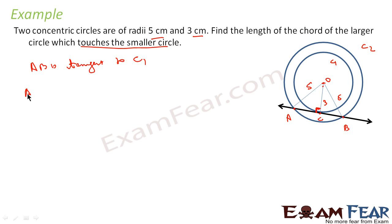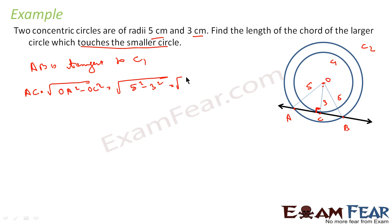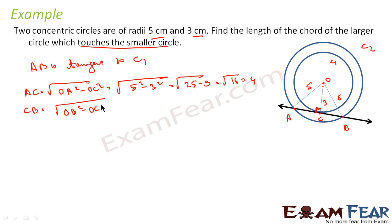Let me find AC. AC is nothing but the square root of OA squared minus OC squared, which is the square root of 5 squared minus 3 squared — that is the square root of 25 minus 9, which is the square root of 16, so AC equals 4. Similarly, CB is the square root of OB squared minus OC squared, which is also the square root of 25 minus 9, giving the square root of 16, so CB equals 4.